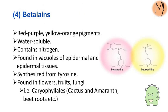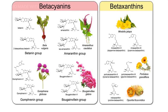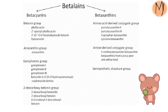The next group of pigments is betalains, which contain nitrogen. These are synthesized from tyrosine, found in vacuoles of epidermal and sub-epidermal tissues, and are water-soluble. These red-purple and yellow-orange pigments can be found in flowers, fruits, and fungi, and are characteristic of plants in the Caryophyllales order — cactus, amaranth, and beetroot are good examples. They are classified into two groups: betacyanins, which are red to violet, and betaxanthins, which are yellow to orange. This slide shows their absorption spectrum, which plants contain them, and the structures and examples of different betacyanin and betaxanthin groups.